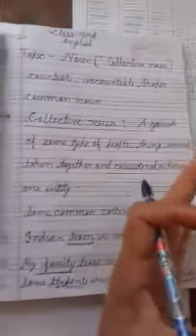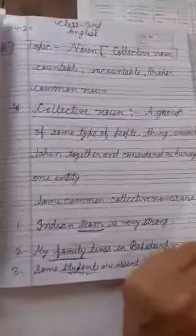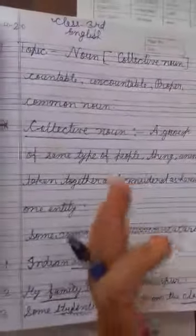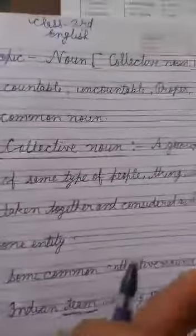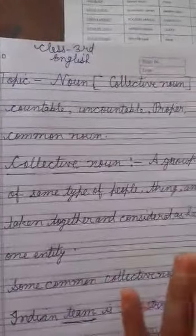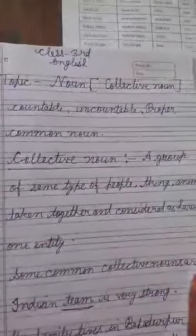Today, topic is noun. Noun definition is: person name, things name, place name, animal's name — it's called noun. How many noun key parts? Countable noun, uncountable noun, proper noun, common noun. Countable — you can count. Uncountable — you cannot count. Proper noun — special name. Common noun — simple names.